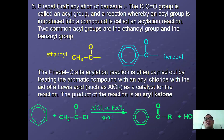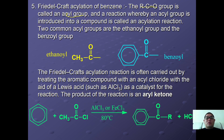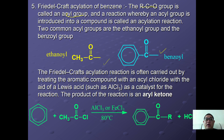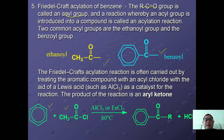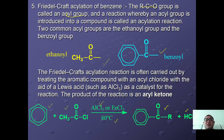The third reaction is Friedel-Crafts acylation of benzene, where an acyl (RCO) group is introduced to the benzene ring. Two common acyl groups are the ethanoyl group and the benzoyl group. The reaction is carried out by treating the aromatic compound with an acyl chloride under a Lewis acid catalyst, producing an aryl ketone. For example, benzene reacts with ethanoyl chloride under AlCl3 with reflux to form an aryl ketone, with HCl as a side product.